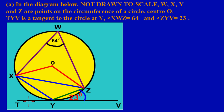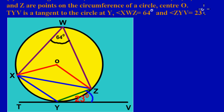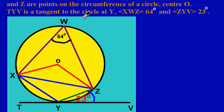We have a circle, and in the diagram below — not drawn to scale — W, X, Y and Z are points on the circumference of a circle with center O. TYV is a tangent to the circle at Y, and the angle XWZ is equal to 64 degrees, and angle ZYV is equal to 23 degrees. Remember, a tangent is a straight line that only passes through the circumference at a single point — here the tangent TYV only touches the circumference at point Y.